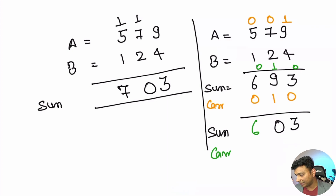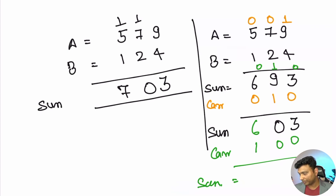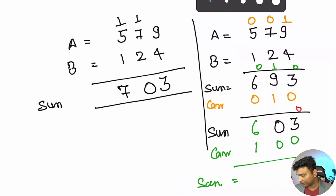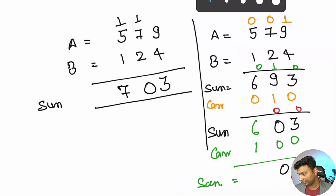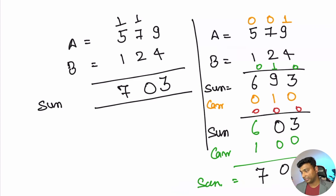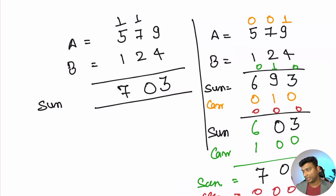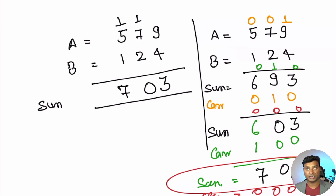We do the sum again: 3 plus 0 is 3, 0 plus 0 is 0, 6 plus 1 is 7. The carry is now 000, so we stop. Our output sum is 703. We stop the calculation when the carry is zero.